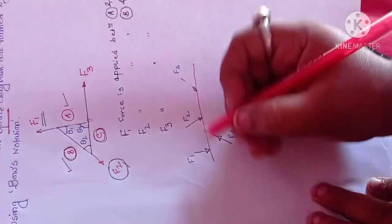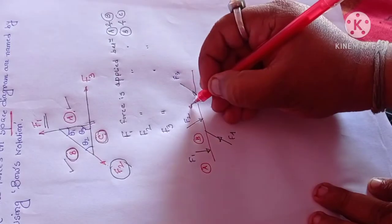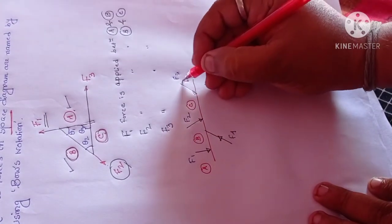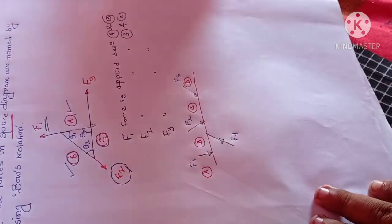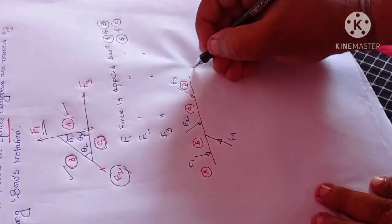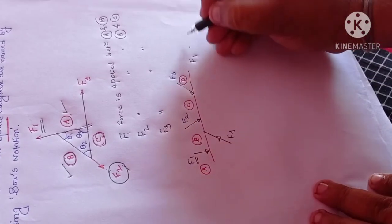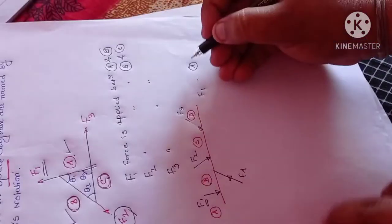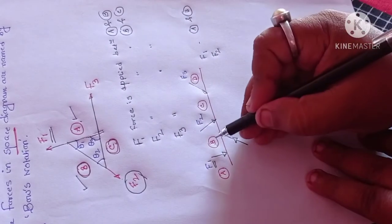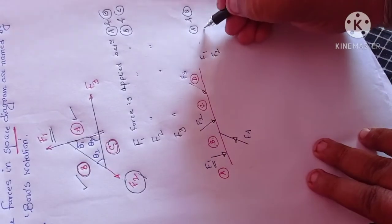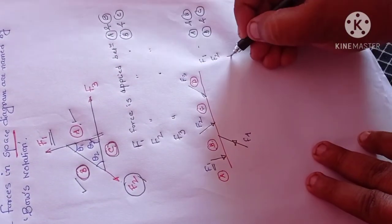Let's put the notation A, B, C, and D. So simultaneously, if you want to name them, what will be the way? For F1, you can see F1 force lies between A and B. Similarly, in case of F2, you can see it is between B and C.